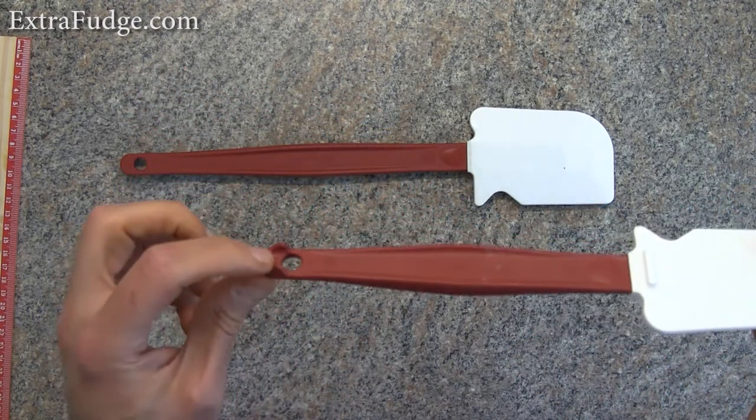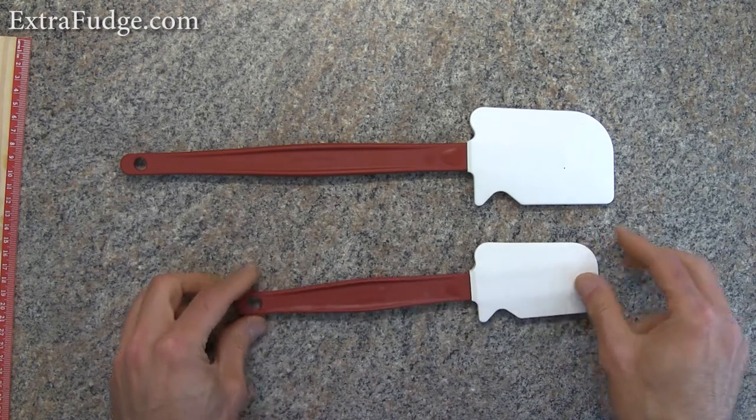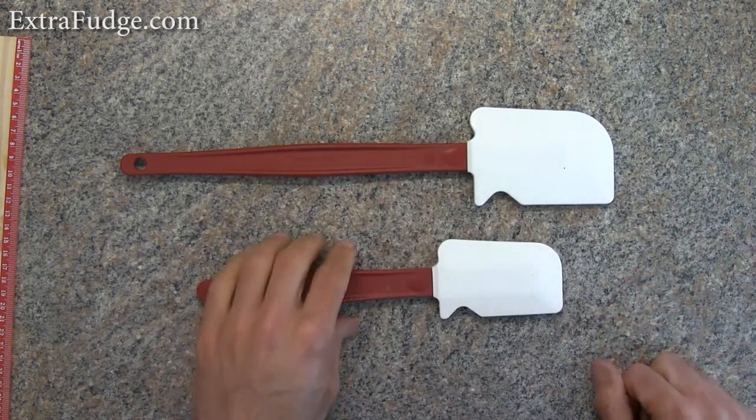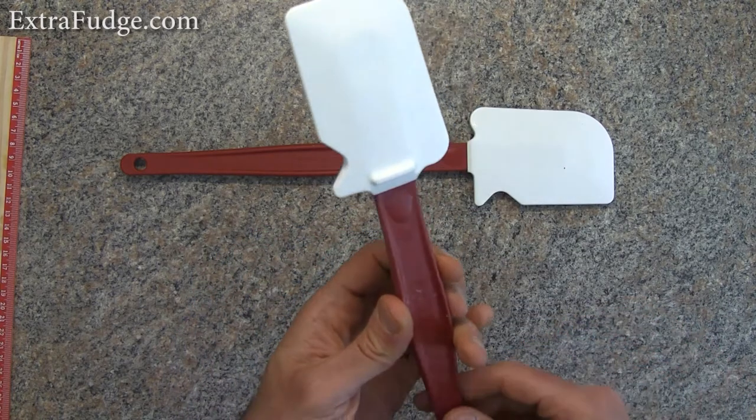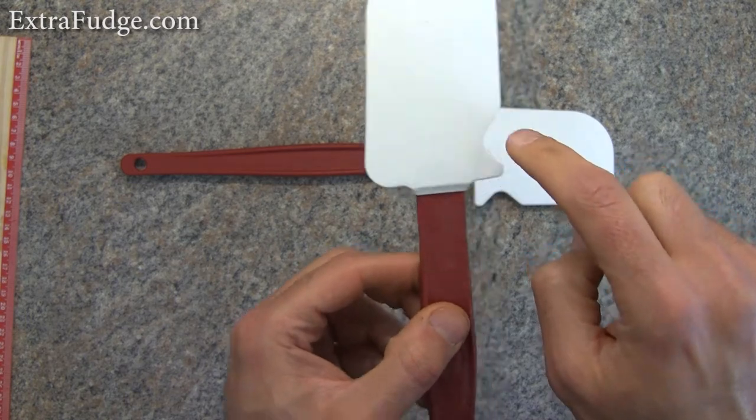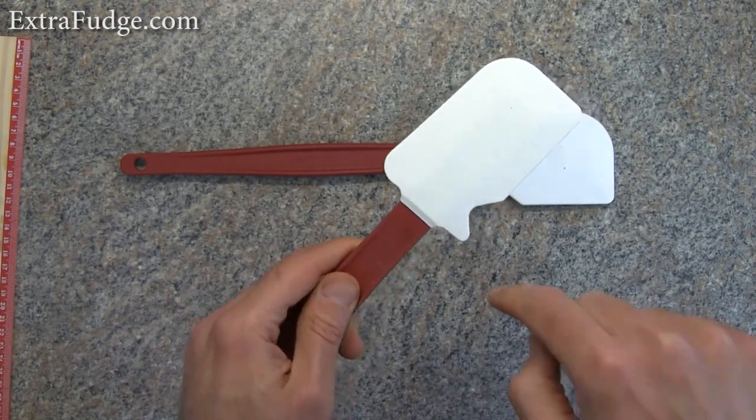It has these little footers here so you can leave it and whatever is stuck here won't touch the surface you're putting it on. They have this little lip here, and this works for scraping bowls and jars.